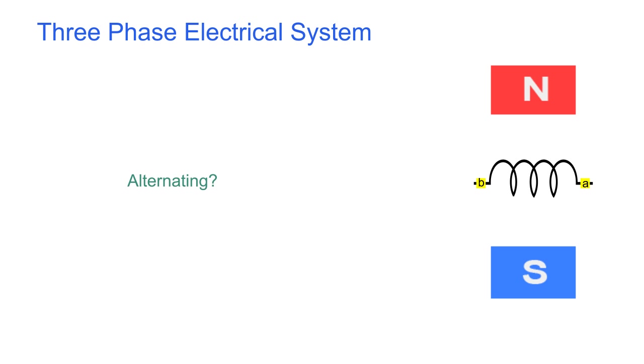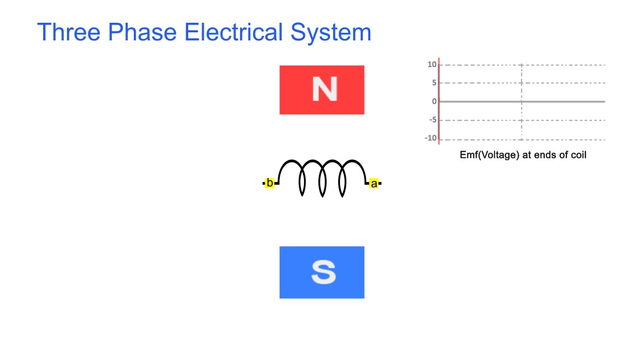What does alternating mean? You can see here a coil is rotating in a static magnetic field and EMF is appearing at the ends of the coil. Let's take a more detailed view.